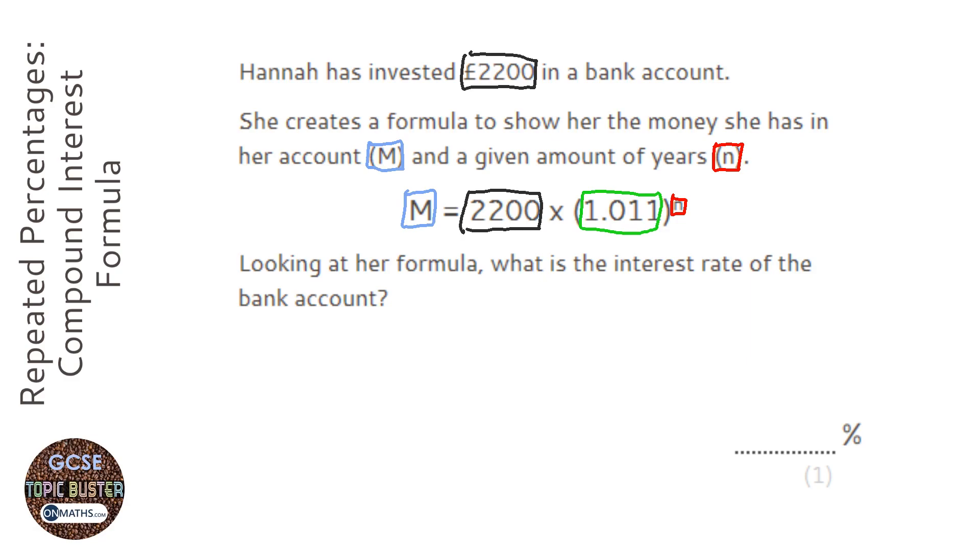So to work out a multiplier, you start off with 100%, you add on the percentage increase, and then you divide by 100. So we're going to do it the other way - we're going to start off with the multiplier.